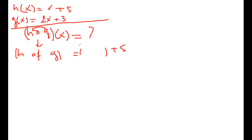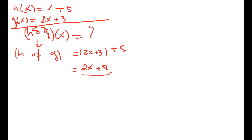You write the first one without the x, so h has a blank. We're going to substitute that blank with function g, which is 2x + 3. That's it — that's all you do to find a composite function: plug one into the other. Then you can simplify: this becomes 2x + 8.